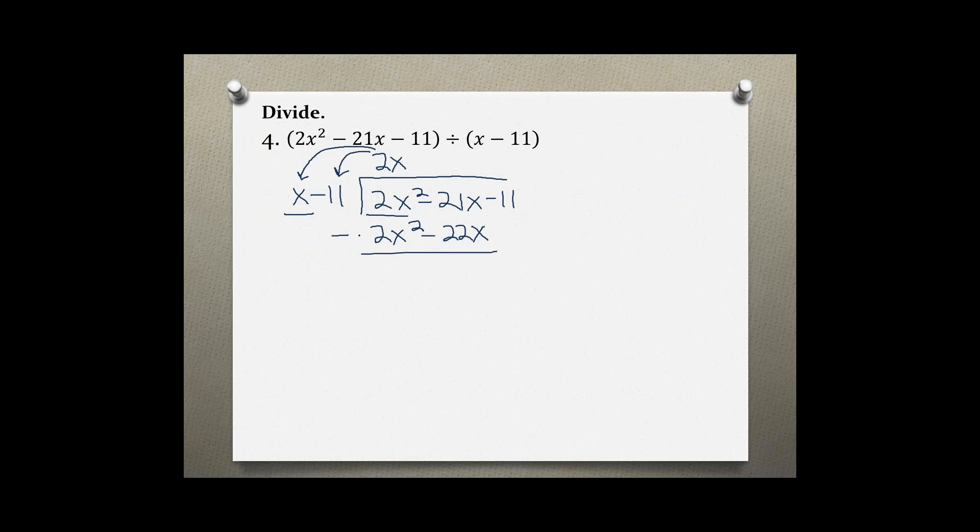Now let's subtract which changes the signs and add down. 2x squared minus 2x squared is 0 and negative 21x plus 22x gives me 1x or just x.